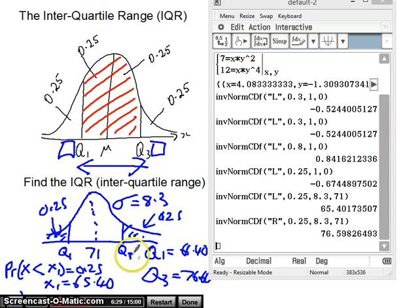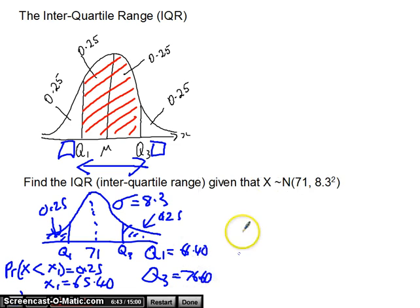Now, there's a few different ways you could have worked this out. We could have gone a left-tail setting and found 75% here, or 0.75, or we could have just used symmetry. Worked out the distance here, and then said, well, it's going to be the same distance to here. So, there's a few different ways you can work it out. But now that we have Q3 and Q1, Q3 is 76.6, Q1 is 66.4. So, we want the interquartile range, Q3 minus Q1 is equal to 10.2. So, there we go. That's our interquartile range.